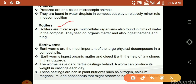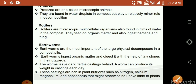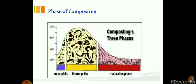Rotifers are microscopic multicellular organisms found in films of water in the compost; they feed on organic matter and also ingest bacteria and fungi. Earthworms are the most important of the large physical decomposers in a compost pile. Earthworms ingest organic matter and digest it with tiny stones in their gizzards, leaving behind dark fertile castings rich in plant nutrients such as nitrogen, calcium, magnesium, and phosphorus.